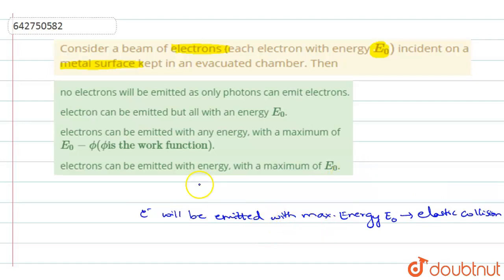And with any less energy than E0, if it is emitted, some of them will be emitted with less energy because part of the incident energy of the electrons is used in liberating the electrons from the metal surface. So whenever a beam of electrons is emitted on a metal surface, some part of it will be used in liberating the electrons from the metal surface.